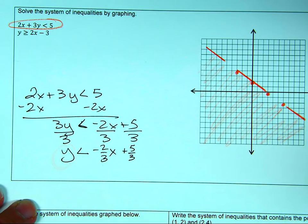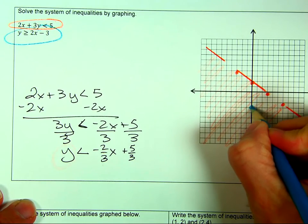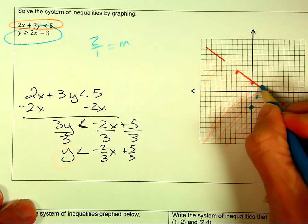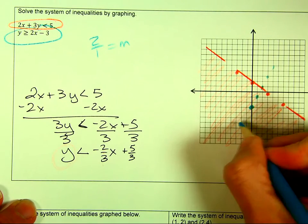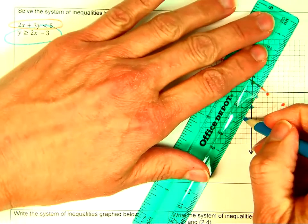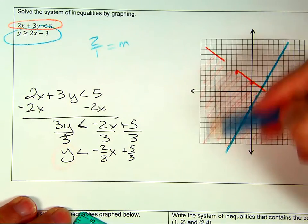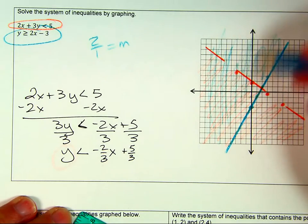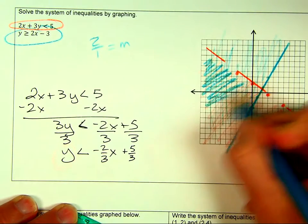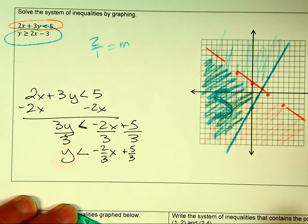The other inequality is already in slope-intercept form. The y-intercept is at -3, so I go down to -3. The slope is 2 over 1, so I go up 2 and right 1, plotting several points, going backwards if needed. It's a solid line because of the 'or equal to,' and it says greater than, so I shade above the line.